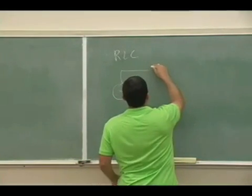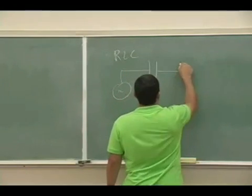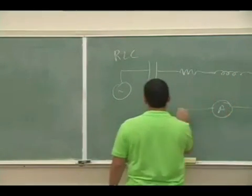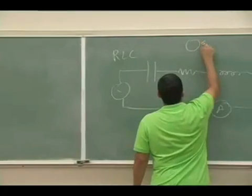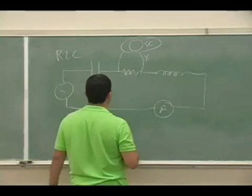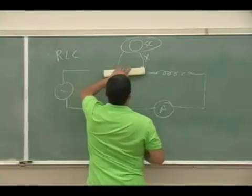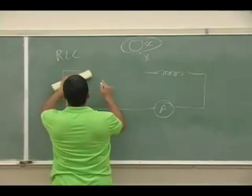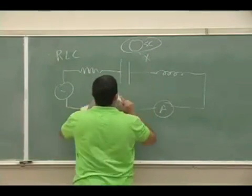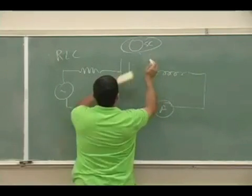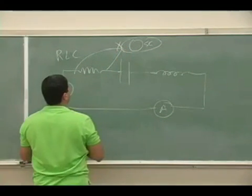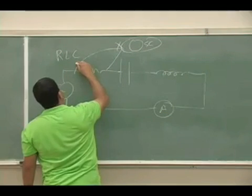I'm going to make the hookup simpler. I'm going to put the capacitor here, resistor in the middle, and the inductor here. I'm going to have an ammeter and an oscilloscope. The X outlet of the oscilloscope is going to be across the resistor, with the common one over here.